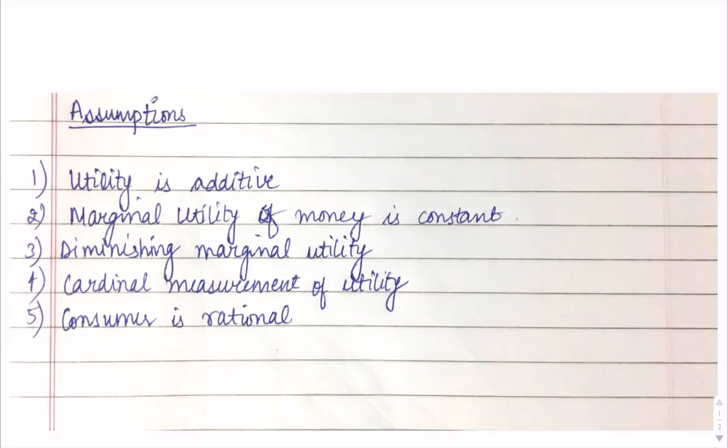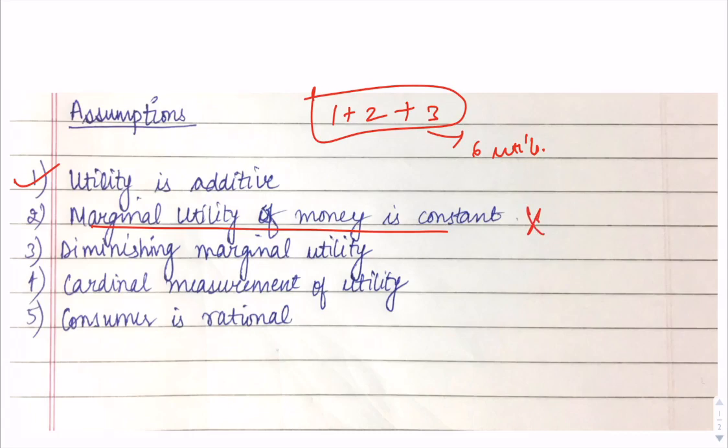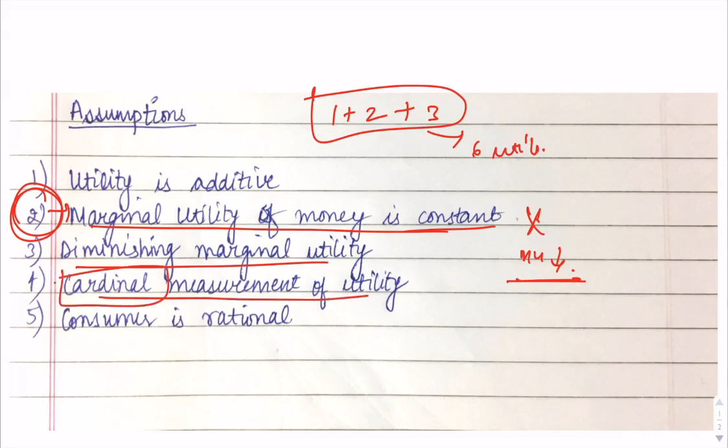Next topic is assumptions. Let's discuss the assumptions of this approach. First, utility is additive. We are taking utility in numerical terms - 1 util, 2 utils, 3 utils. These can be added to get total utility, so 6 utils will come. Second, marginal utility of money is constant. But in real life, it is not possible. As we earn more money, marginal utility increases because we get more satisfaction. So it can't be constant. Third is diminishing marginal utility. We will discuss it now. Marginal utility is slowly falling, not rising. Fourth is cardinal measurement of utility - we can express it in numerical terms. Last is consumer is rational, meaning the consumer will buy the combination that gives highest satisfaction.